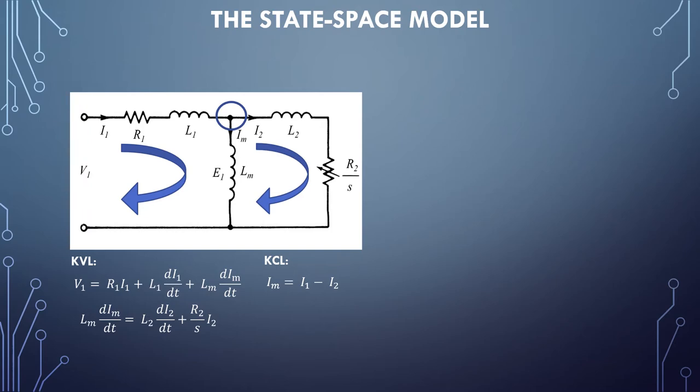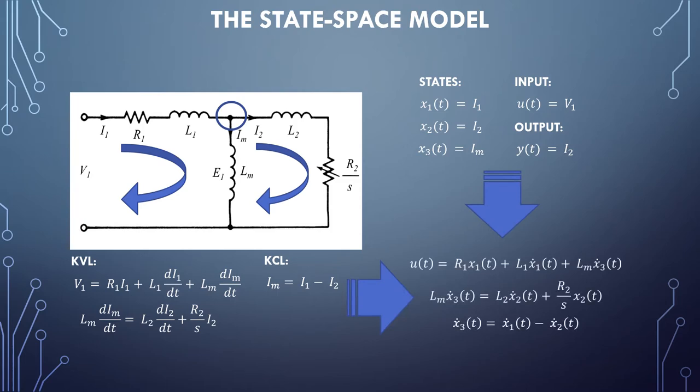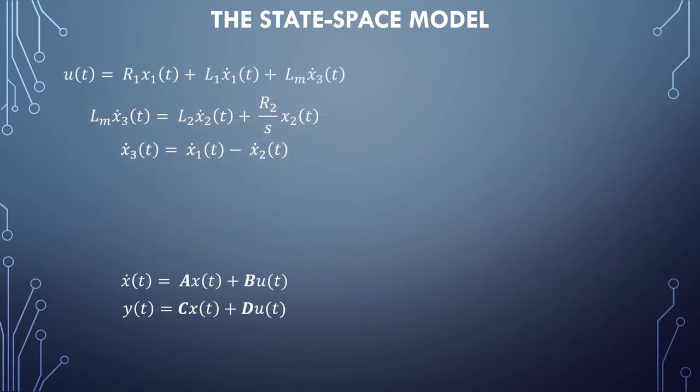The next step is to define our states, our input, and our output. As shown here, the currents in the circuit were defined as the states of the system. That is because they are the quantities that must be derived with respect to time. When we substitute the state-space definitions into the circuit equations, it becomes a little more apparent why we define them that way. Our goal here is to take these equations and place them into the general form for a state-space model.